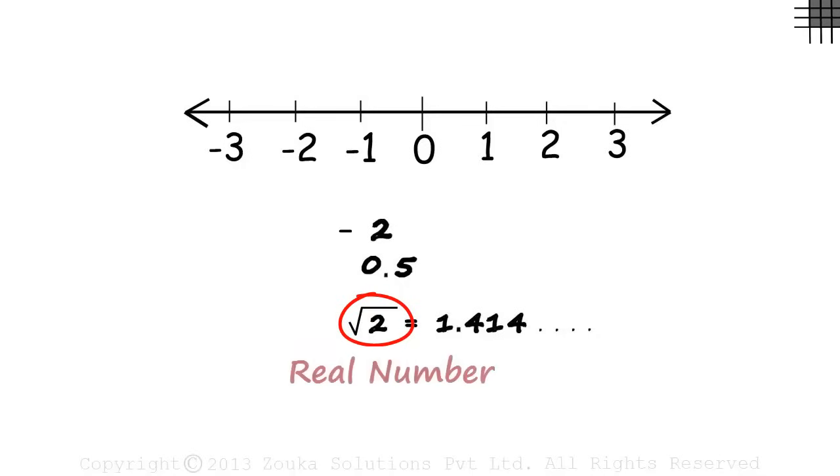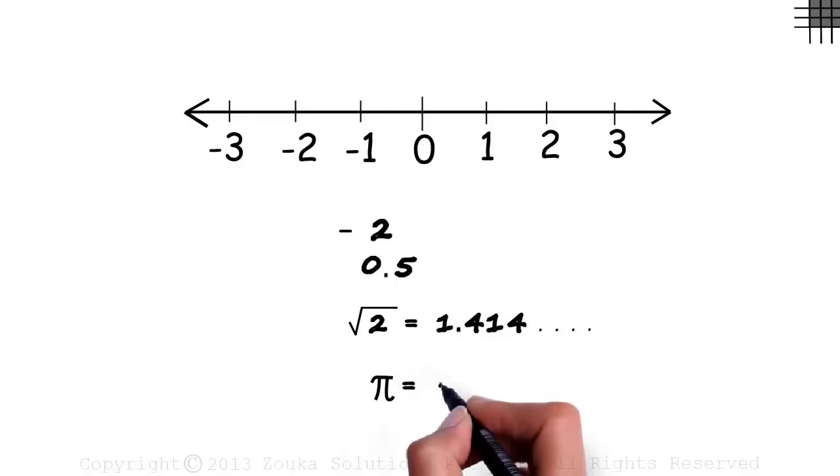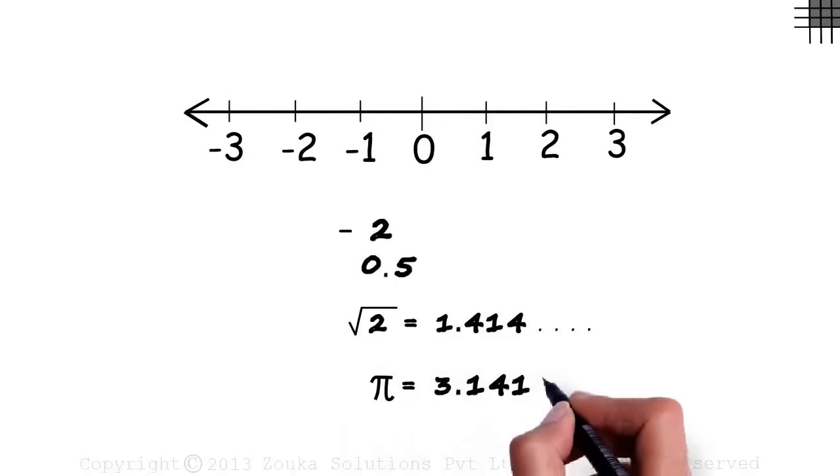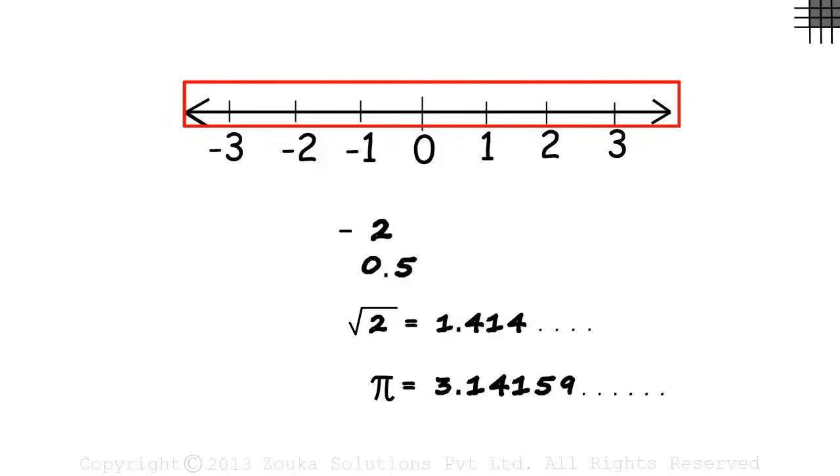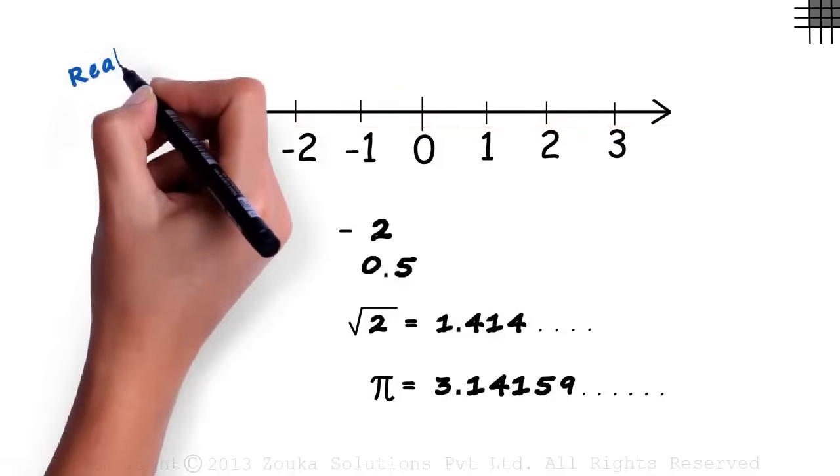So root two is also a real number. And what about the special number pi? It approximately equals three point one four one five nine. Pi is also a non-terminating decimal number. And yes, it can be plotted on the number line, which makes it a real number.